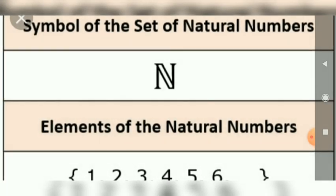Natural numbers are denoted by the symbol N. Natural number starts from 1, 2, 3, 4, 5, etc. and it is going on continuously.